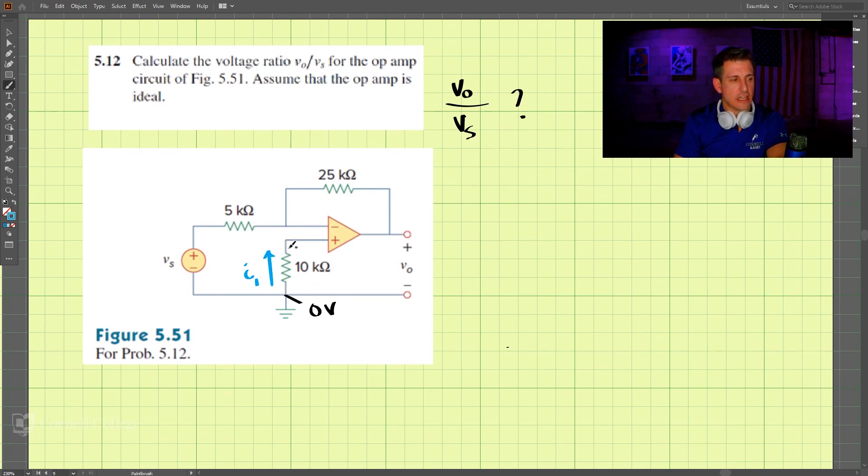Remember that that is equal to 0. This is 0. This is also equal to 0. So that means that this point up here, if the current is equal to 0, this must also be 0 volts right here.